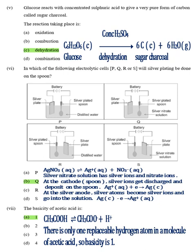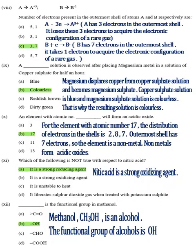Part 8, Answer C, 3, 7. A has 3 electrons in the outermost shell. It loses these 3 electrons to acquire the electronic configuration of a rare gas. B has 7 electrons in the outermost shell. It takes 1 electron to acquire the electronic configuration of a rare gas.